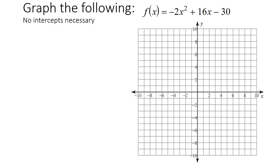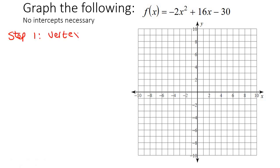So here's our first example. I hope you've watched the previous lesson where I taught you how to find the vertex. The vertex is the place where the graph turns. Now if you are given an equation like this, step one: we are going to find the vertex. In the previous lesson, I showed you that to find the x value of the vertex, you use the formula negative b over 2a, where a is the coefficient of x squared, b is the coefficient of x, and c is the constant.